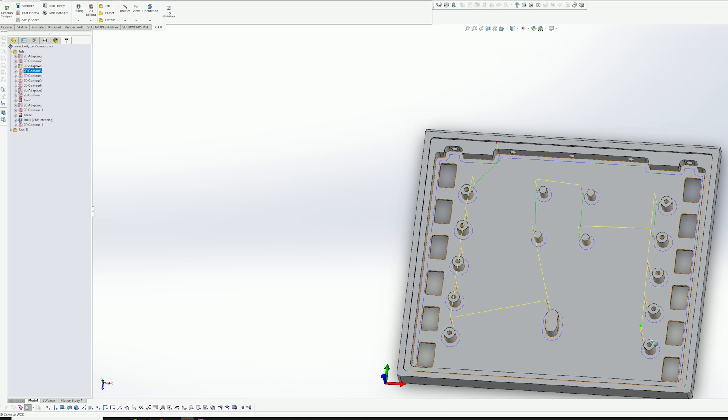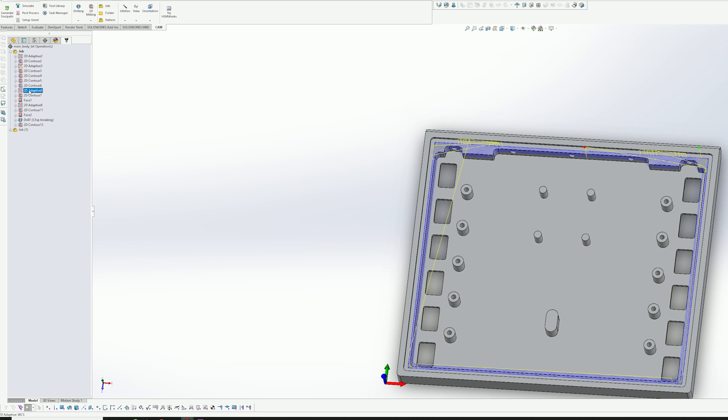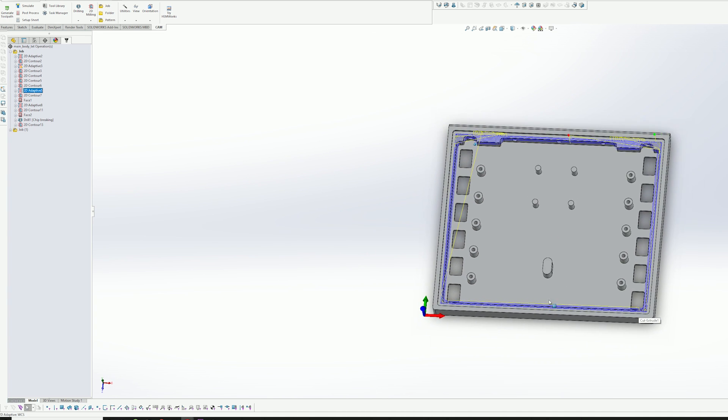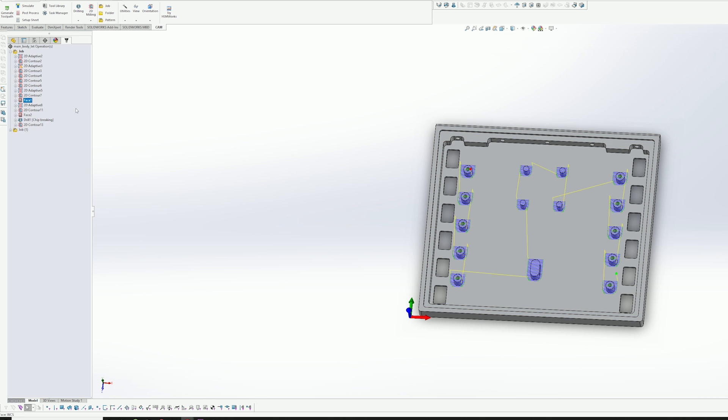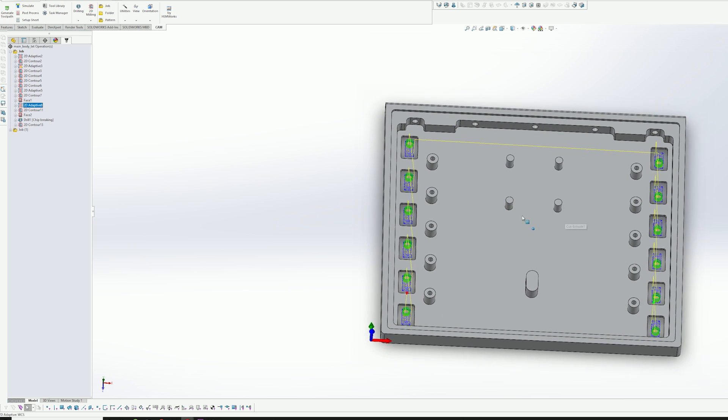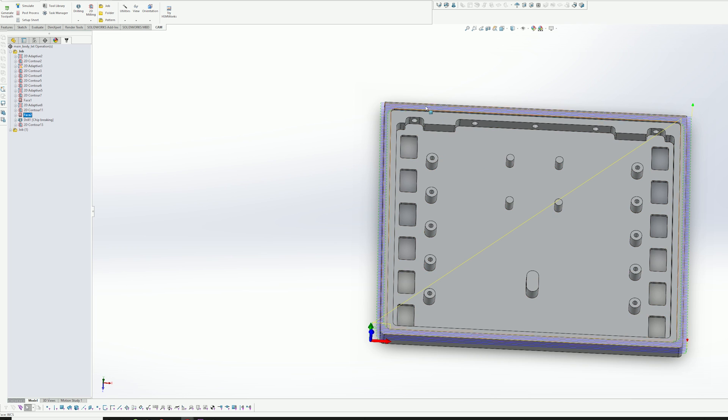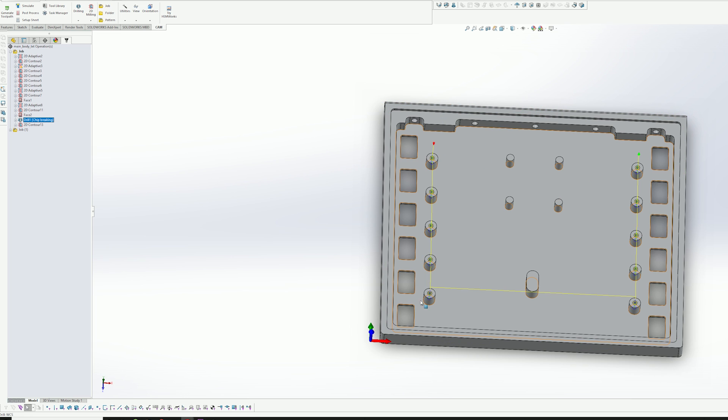After that, just kind of a contour to clean up all these outside edges after the adaptive, a little bit more cleanup. This was just to adjust the size based on the 3D prints that I had. More cleanup on the outside and then cleanup on these holes, which I completely forgot about. And then we move on to an adaptive on this little lip where the cover sits. So just kind of clean that up, contour around there to clean up the edge, and then faced off the top of the posts to make sure that they were at the right height.